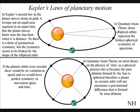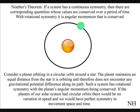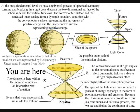If the planets orbits were circular, there would be no variation in speed, and we would have perfect symmetry in movement, space and time. This is because the gravitational field formed by the Sun is spherical. Therefore, a planet in circular orbit will not encounter a gravitational difference, with the effects of time dilation.